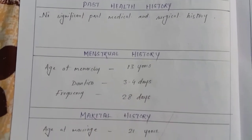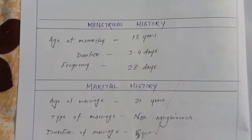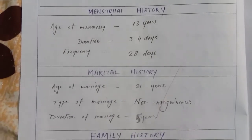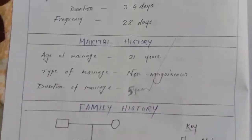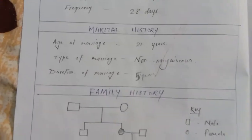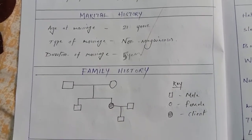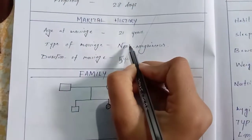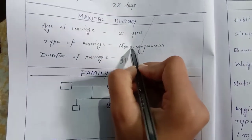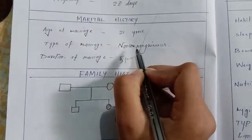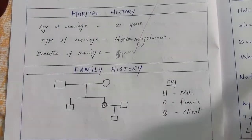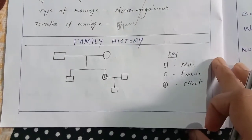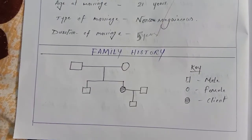Past health history: no significant past medical and surgical history. Menstrual history: age at menarche thirteen years, duration three to four days, frequency twenty-eight days. Marital history: age at marriage twenty-one years, type of marriage non-consanguinous, duration of marriage five years.